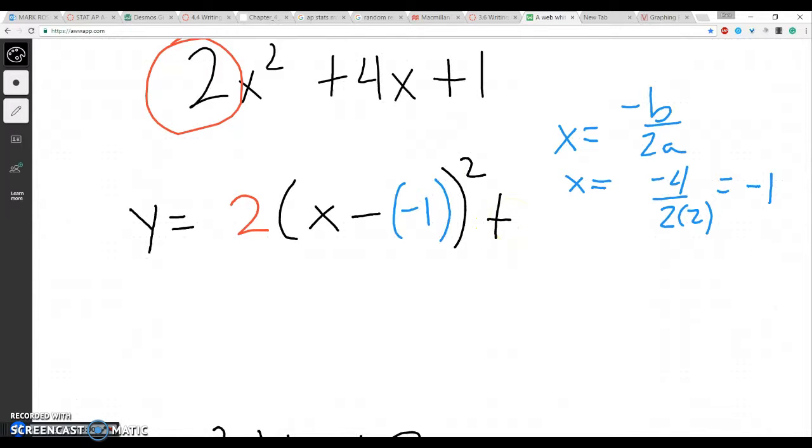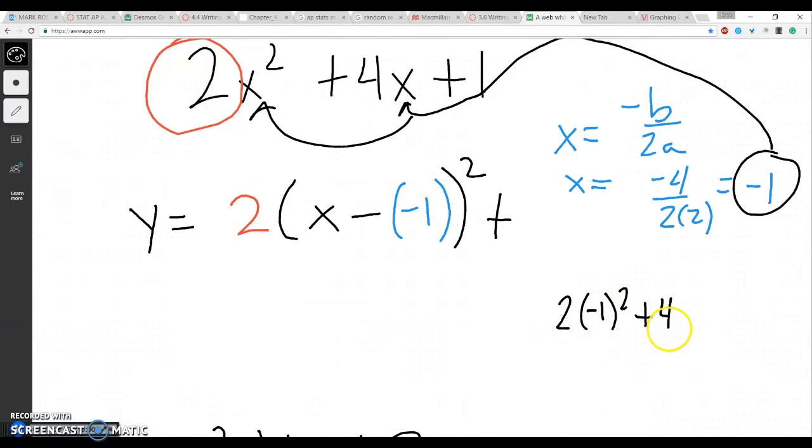Now I have to find my y-vertex. We find our y-vertex by taking that 1 and plugging it in for both our x's. So when I plug that in, I should get 2 times negative 1 squared plus 4 times negative 1 plus 1. That should be 2 minus 4 plus 1, and that would also be, in this case, a negative 1.